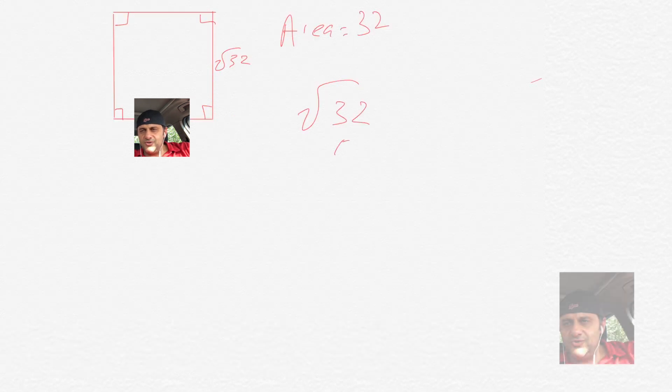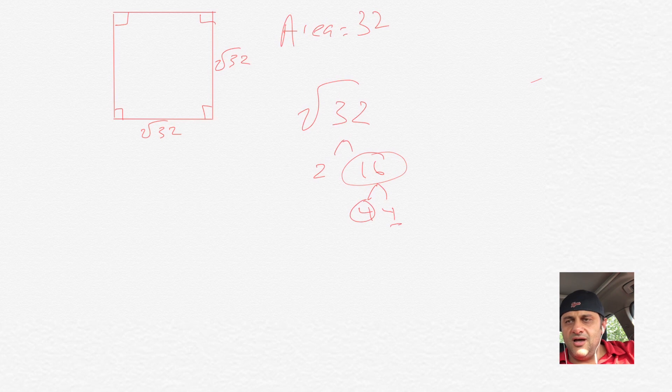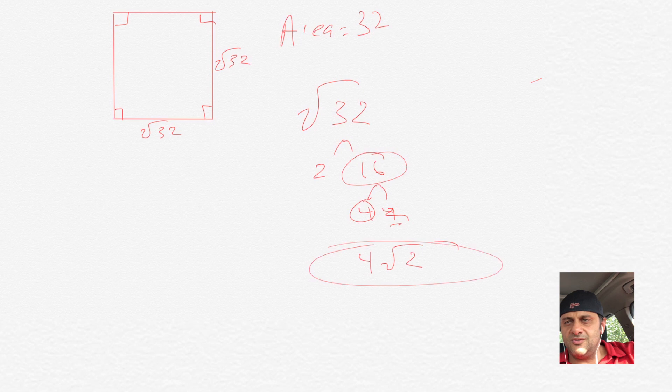The square root of 32, 2 goes into that 16 times. And if you remember the perfect squares of 2, we have 2 times 16, and 16 is 4 times 4. So then we have a pair of 4s as the 4 comes out, and there's no other pair for that 1, 2. So we have 4 times the square root of 2. That is the most simplified version of the square root of 32.